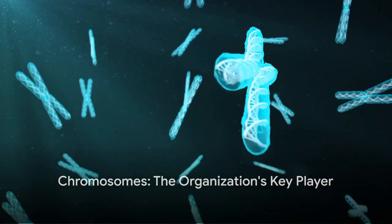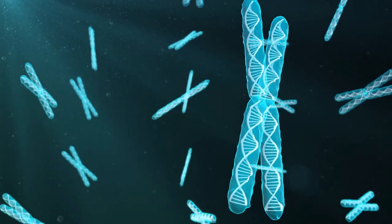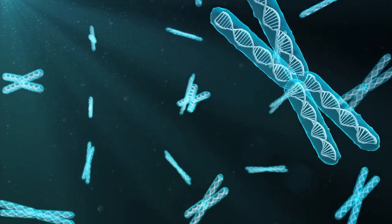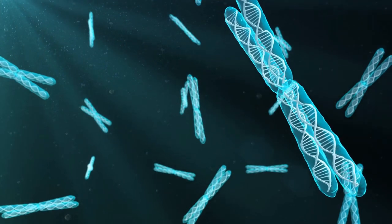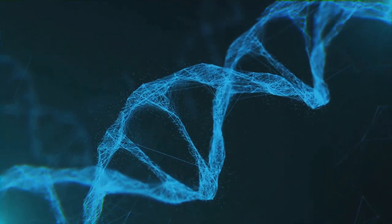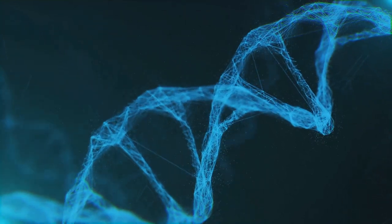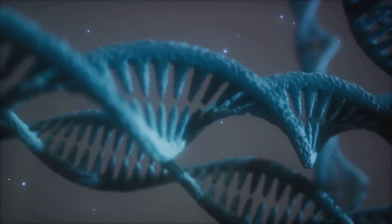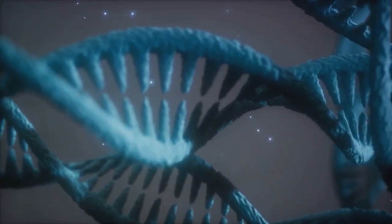They are like the chapters of our cookbook, each one containing a group of related recipes, or in our case, genes. Humans typically have 23 pairs of these chapters, making up a complete set of 46 chromosomes. Each chromosome is tightly coiled and packed with genes, making it a vital part of our genetic blueprint. So from DNA to genes to chromosomes, we see the organization of life's blueprint.